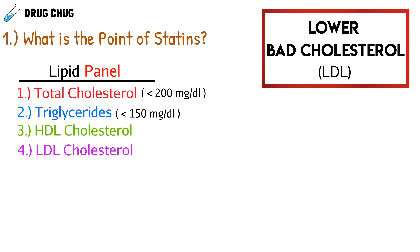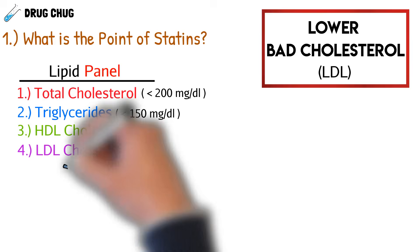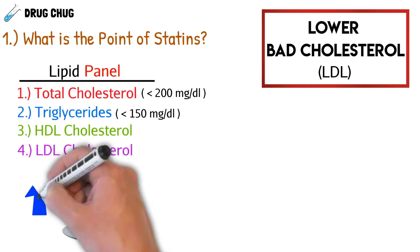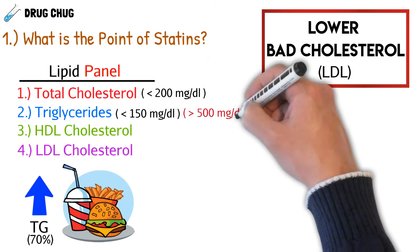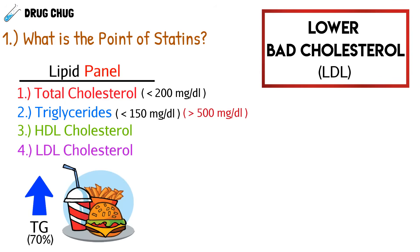Triglycerides primarily come from the foods we eat — about 70 percent actually comes from our diet. This isn't typically the first thing we look at on a lipid panel unless the triglyceride level is over 500, which is extremely high. If it's not over 500, it's not the first thing we're going to target.